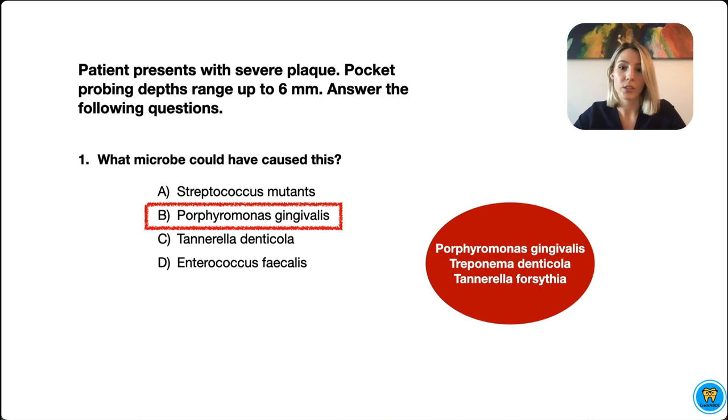Now let's go over the wrong answers. Streptococcus mutans is the bacteria associated with caries and enterococcus.